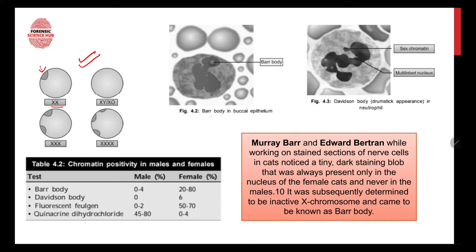Looking at this comparison chart: in XX genotype, a Bar body is visible attached to the nuclear membrane. In XY, there is no additional X so no Bar body. In XO (Turner), there is also no Bar body. In triple X (XXX), there are two Bar bodies. And if the genotype is XXXX, there would be three Bar bodies — the number of Bar bodies is always one less than the total number of X chromosomes.